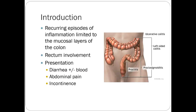Ulcerative colitis — we've basically already talked about all the drugs. Think of UC as kind of a Crohn's disease light in the sense that it can be as debilitating as Crohn's but you don't have the same breadth of involvement possibilities, and you usually don't see as much fistulation, though it certainly is possible.